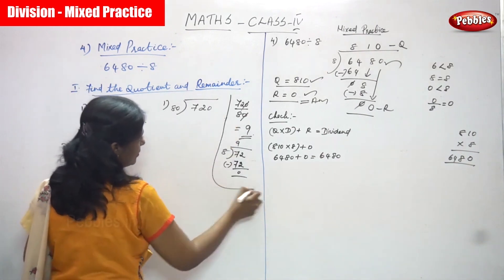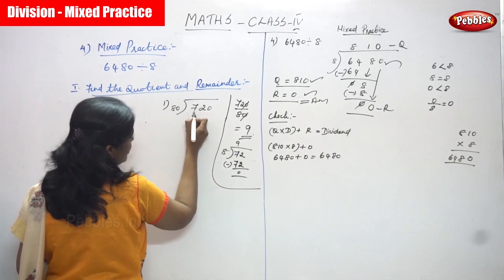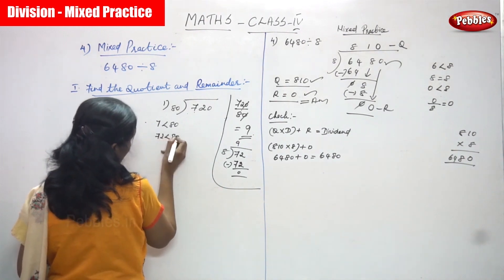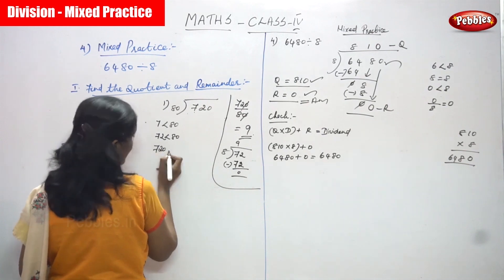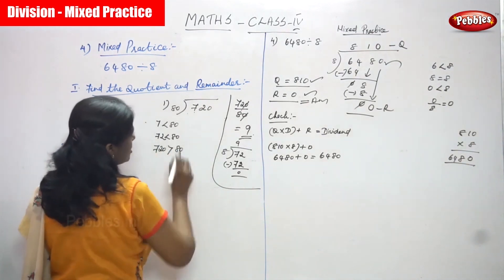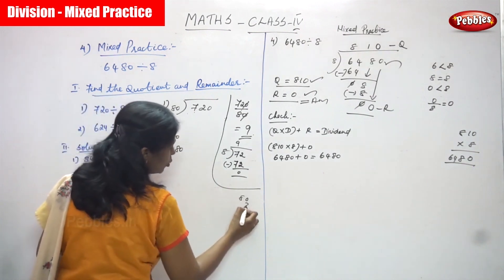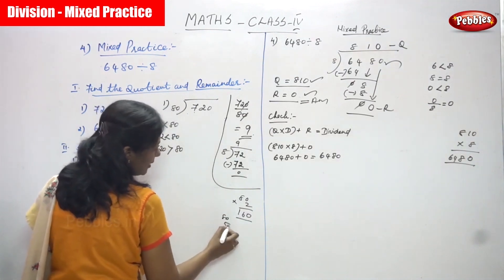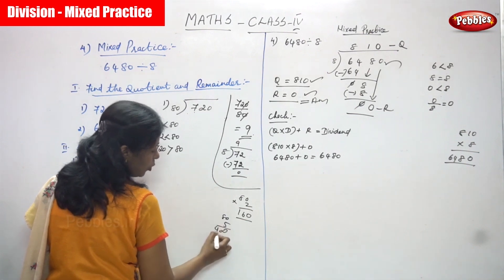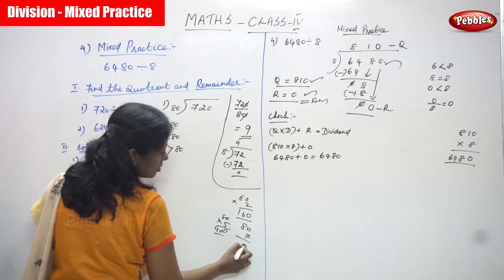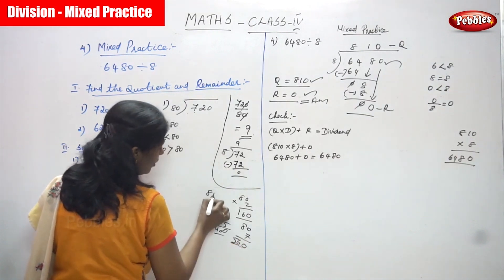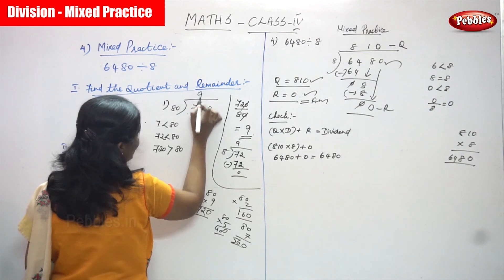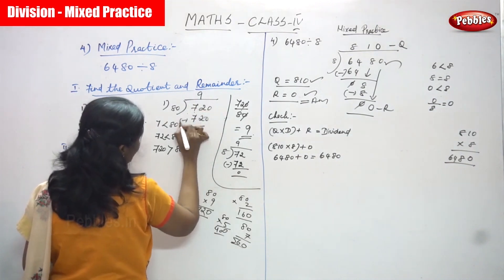Otherwise you can do this regular method. 720 divided by 80. First compare 7 with 80 — 7 is less than 80. Then compare 72 with 80 — 72 is also less than 80. So 720 is greater than 80, so now we divide. 80 goes how many times into 720? Try 9: 9 into 0 is 0, and 8 nines are 72. So quotient is 9 and 720 minus 720 gives 0.